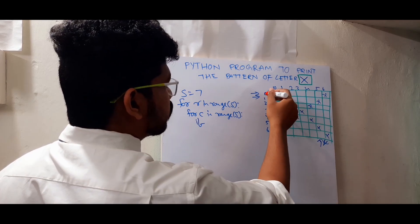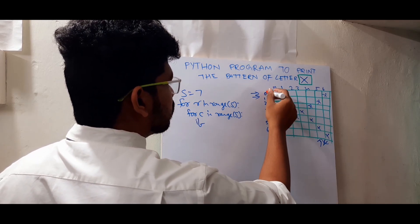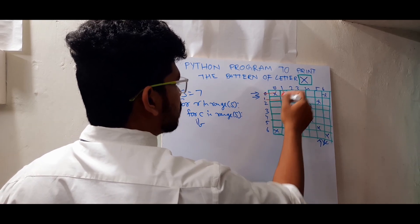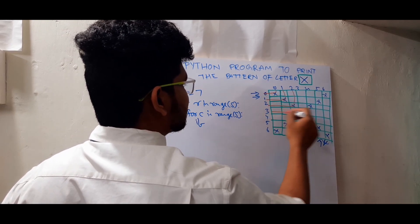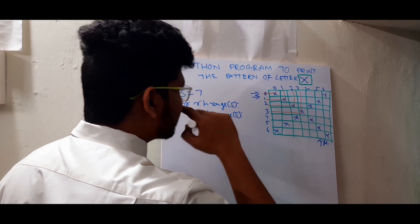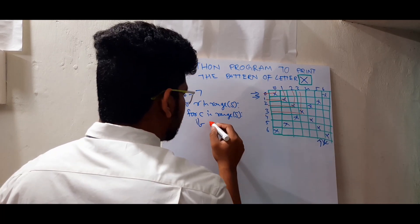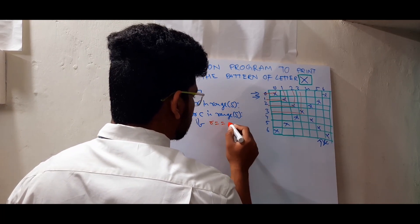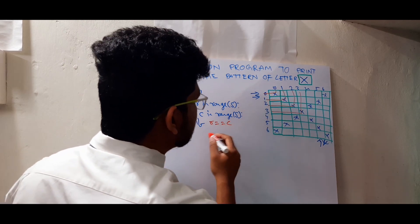So if you see, row is zero, column is zero. Row is one, column is one. Row is two, column is two. This is one condition. So write conditions for this slanting line. If row equal to equal to column. So if row equal to equal to column, I'll print that.